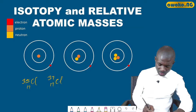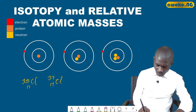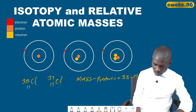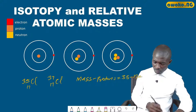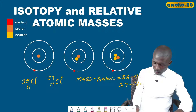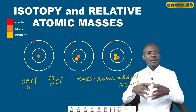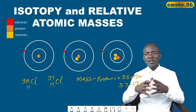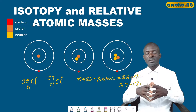In the first case, mass minus protons gives 35 minus 17, giving the number of neutrons. In the second case, 37 minus 17 gives a different number of neutrons. This clearly shows that the difference in neutron count determines the type of isotope.